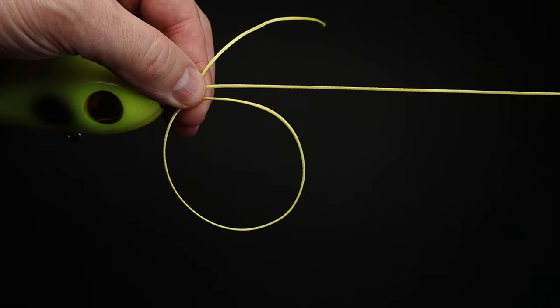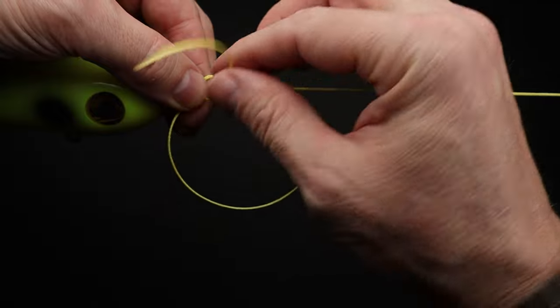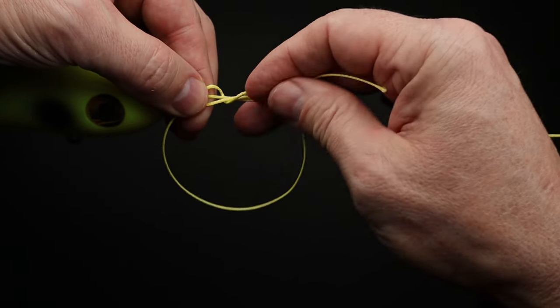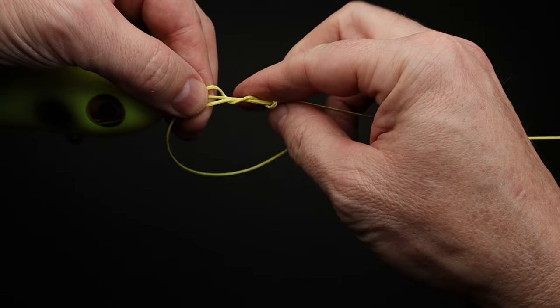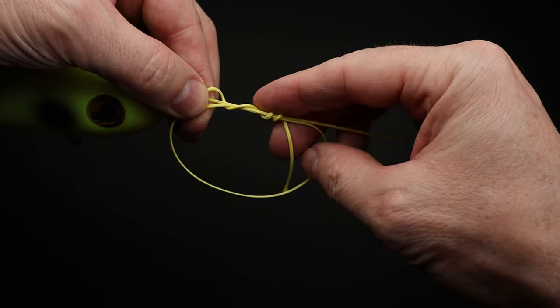Next bring the end of the line down through the loop and wrap it around both lines 6 to 8 times. For heavier lines 6 wraps is sufficient. For lighter line you should use 7 to 8 wraps.